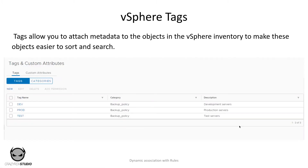To support dynamic selection of VMware objects based on user-defined rules created in NMC, we use tags in vSphere. Tags allow you to attach metadata to objects in the vSphere inventory to make them easier to sort and search. Tags are supported in vSphere version 6.5 and later. When we create a tag in vSphere, it can be assigned to a category to group related objects together. We can also specify which object types the tags will be applied to, and the vSphere web client displays created tags under Tags and Custom Attributes in the left pane.